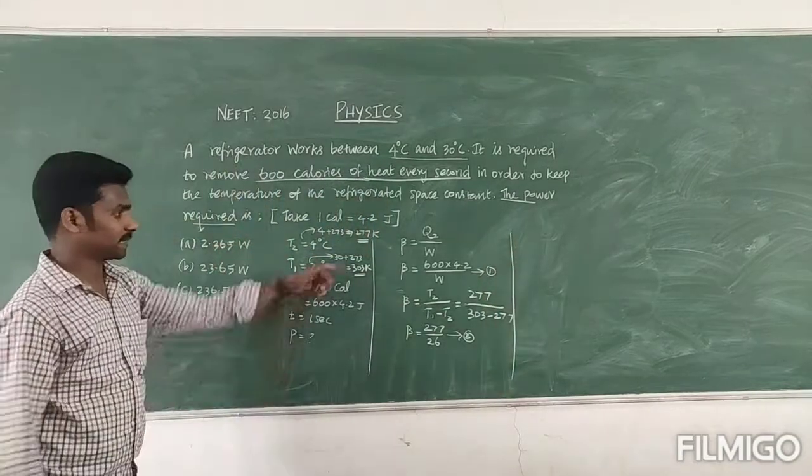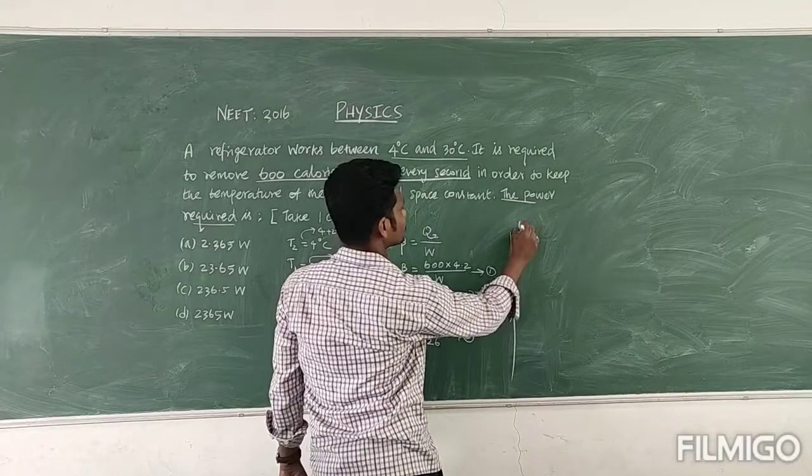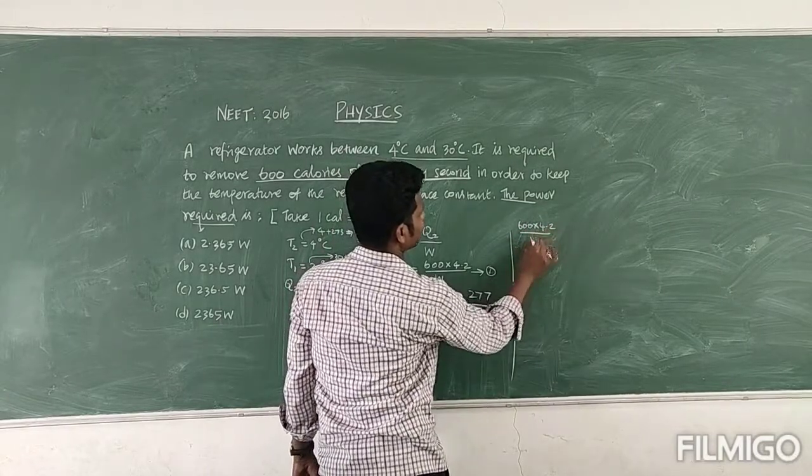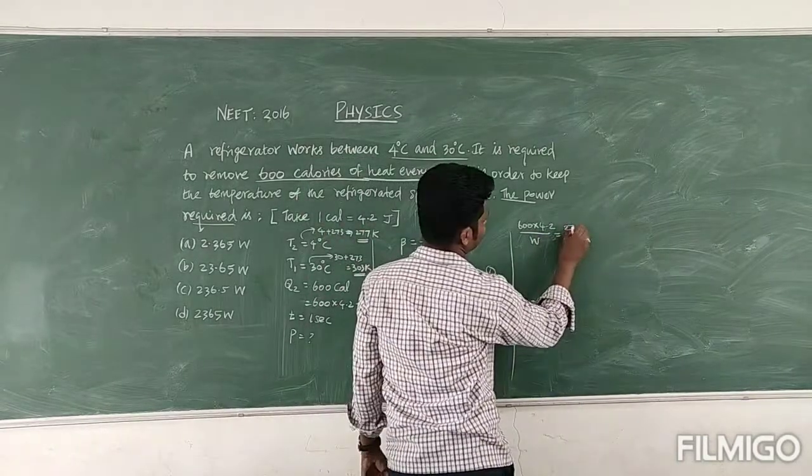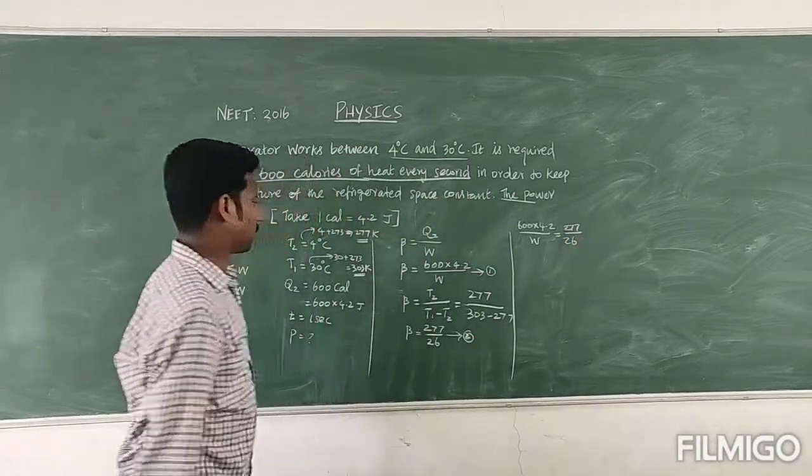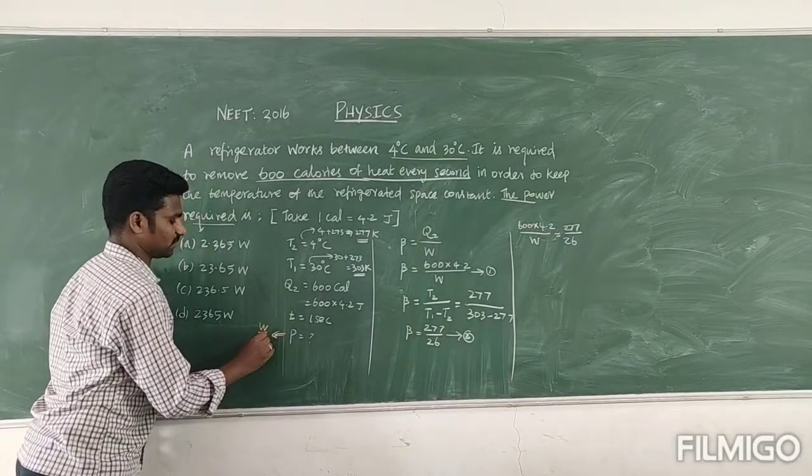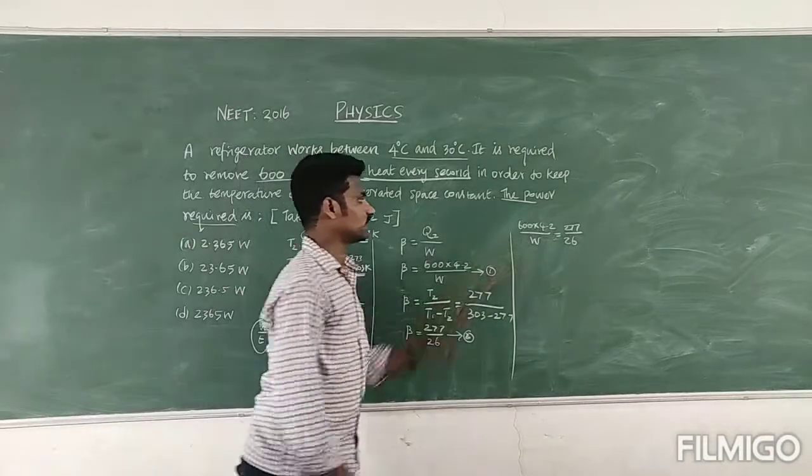Now we can combine equation 1 and 2. So therefore 600 into 4.2 divided by W equal to 277 divided by 26. Therefore first we want to find the work done, then only it is possible to find power, because power you know, work done divided by time. So you need to calculate the work done.